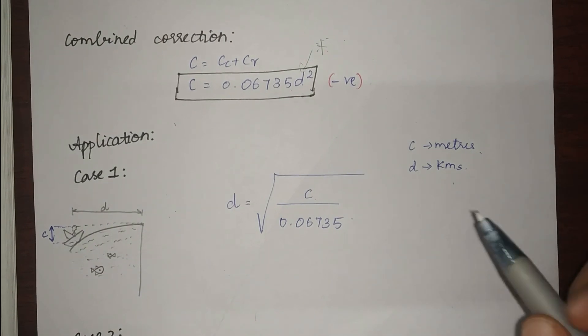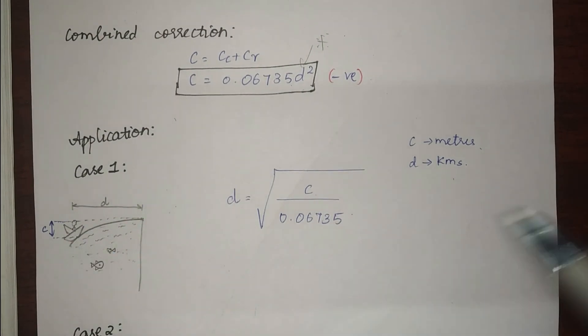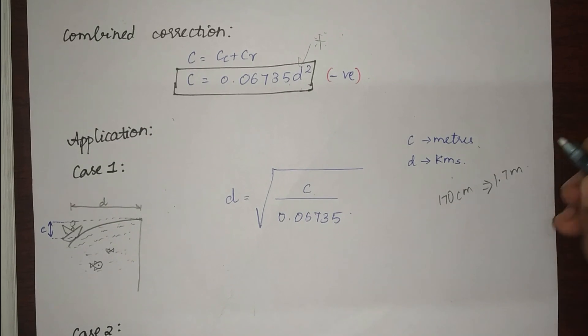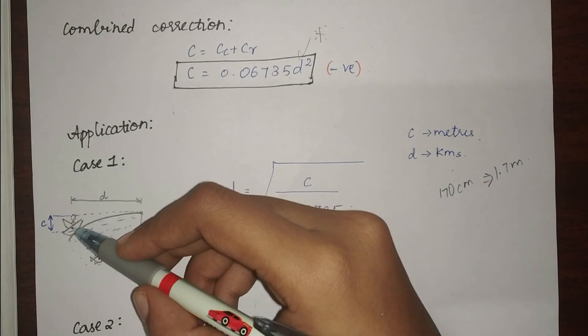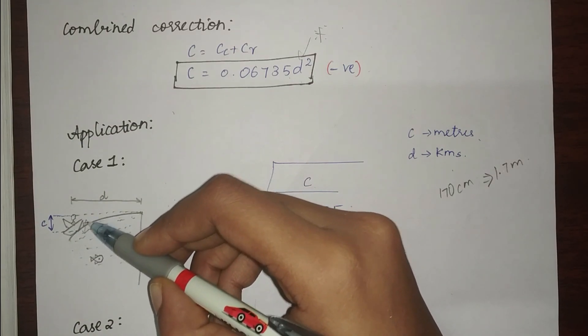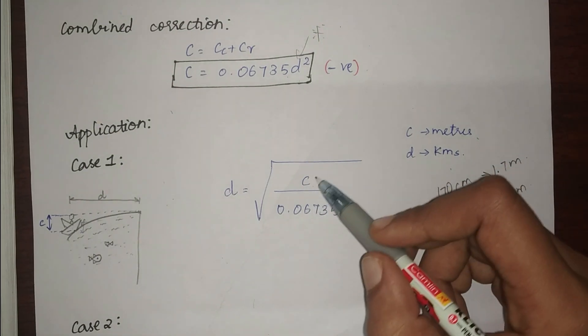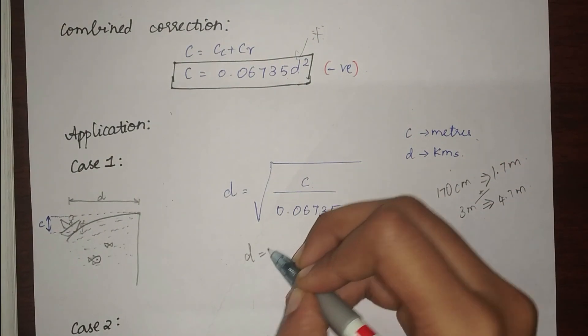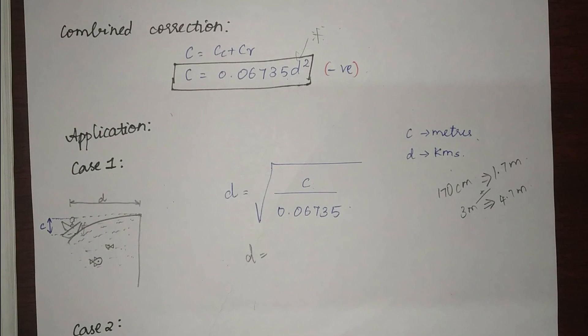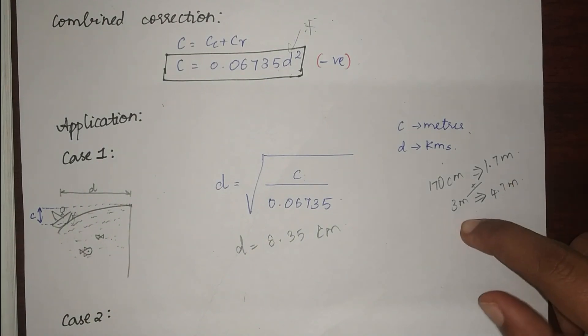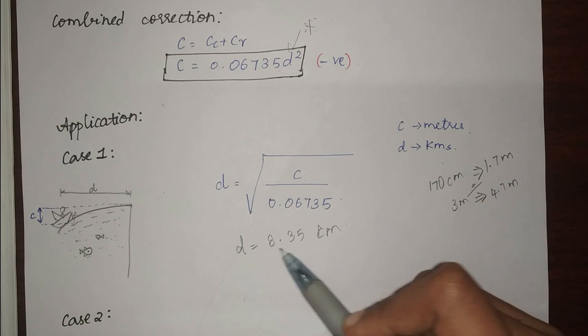And something which I forgot to say here is the D is always in kilometers and C is always in meters. You have to substitute in those units only. I know my height. Say my height is 170. I'm not 170 by the way. My height is 170 centimeters, and that means 1.7 meters. And the height of the deck of the ship, because you will not be standing on the water, there will be some height of deck also. Say it is 3 meters. So the total height is going to be this plus this, which gives me 4.7 meters. Say my C value is 4.7 meters. So the distance which I will see from my point till the horizon is 8.35 kilometers. So a person of 1.7 meters standing on a 3 meter deck can always look to about 8.35 kilometers.